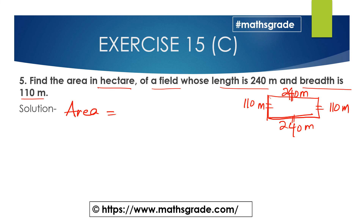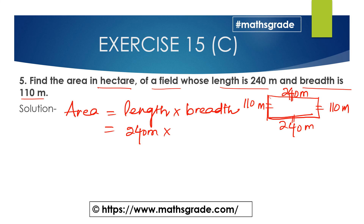The area of the rectangular field is length multiplied by breadth. Length is 240 metres and breadth is 110 metres. So we calculate 240 × 110, which is 24 × 11, using a shortcut.